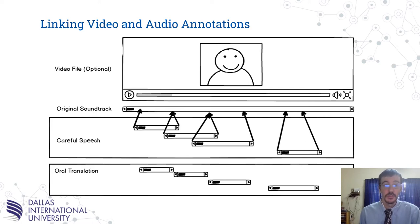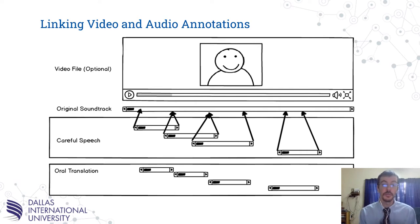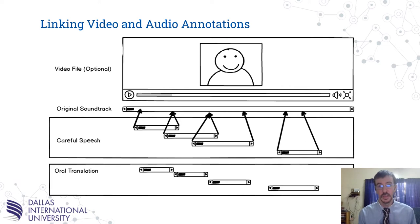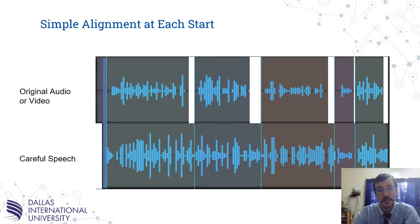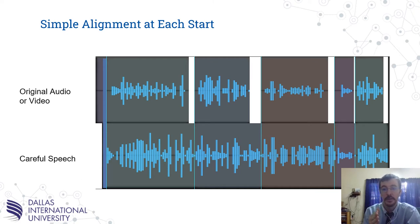When you do oral annotation, you have the original soundtrack — say that's a minute thirty — and then you have all these individual segments of careful speech that are longer than the original speech took. If you're going to repeat something slow and carefully, it's going to take longer. Same with the oral translation. How do you align these so that if you're playing through the video with the careful speech, everything sounds right and the timing is right? One quick and dirty option would be to align everything so that it starts at the start of the segment, but they will get more and more out of sync, ending up with dead audio or missing video — not ideal.